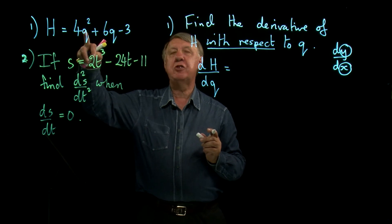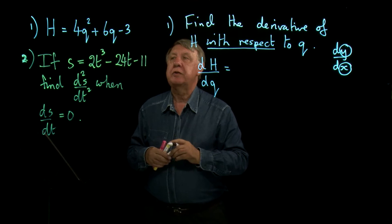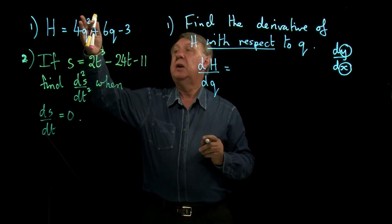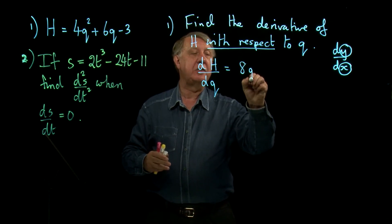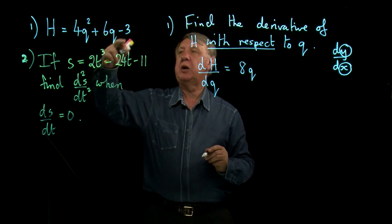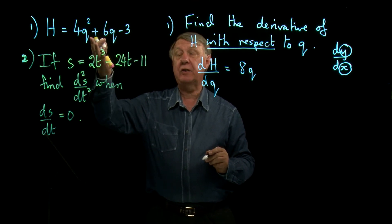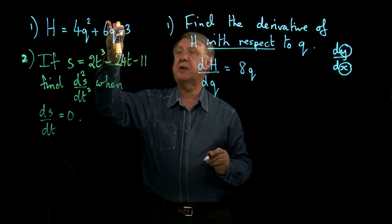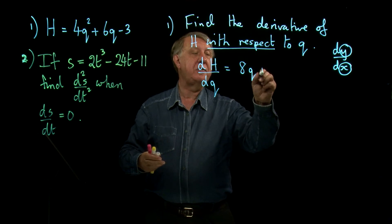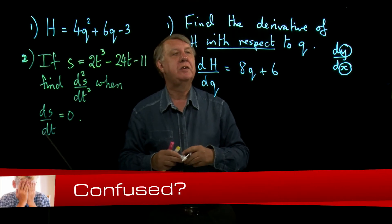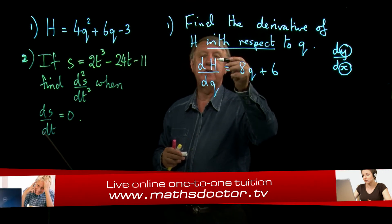All I have to do is imagine that the letter q is really the letter x. If I differentiate something squared, I bring down the 2 and get 8q. If I were asked to differentiate 6x with respect to x, I would get 6. If I'm asked to differentiate 6q with respect to q, I still get 6. So there's the derivative of h with respect to q, written dh/dq.